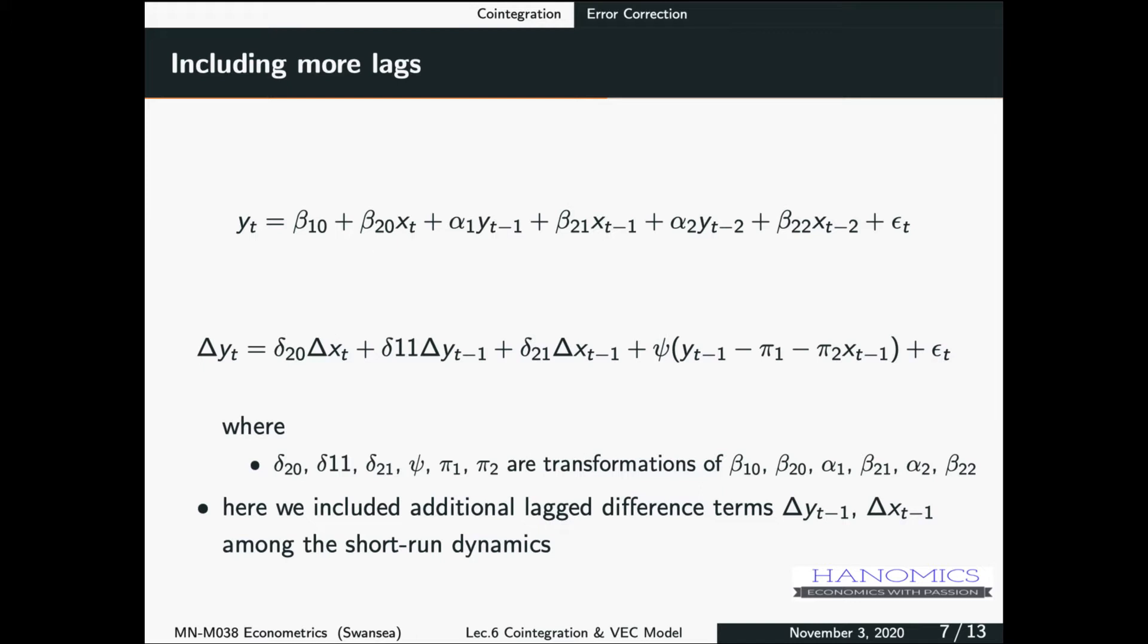How can we know that these consumption and disposable income are cointegrated? We know that they are both I1, and we can't just run the regression using OLS, using the data in level, but we could have an error correction model, and that can explain the short-run and the long-run dynamics of the relationship between these two variables, but we still need to test whether we would have such combination of these two variables that would produce I0 error, or the stationary error.